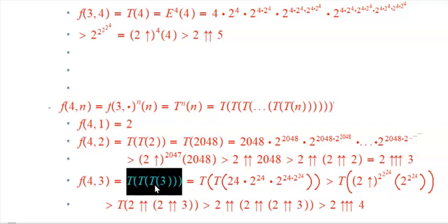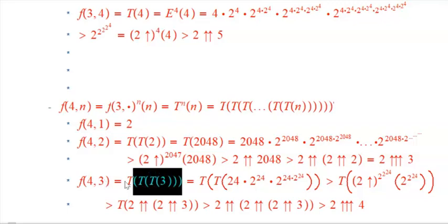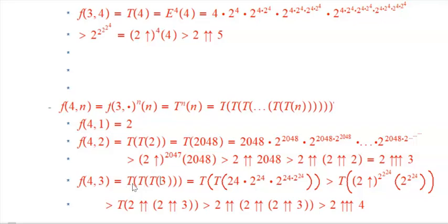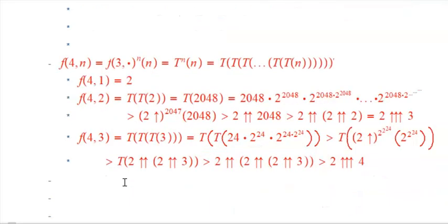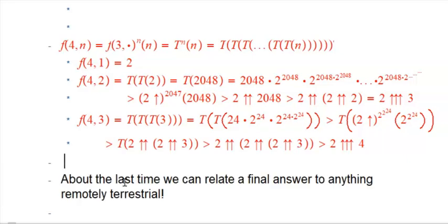We put it into another T operation, which gives us a huge, huge number because T grows so fast and we put such a big input into it. This idea of recursion — where we use the best function we've invented so far, which is T, and repeat it by plugging its output right into its input a growing number of times — gives us some sense of the f4 level.